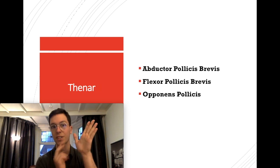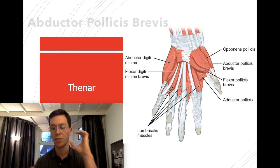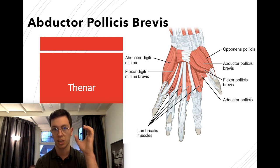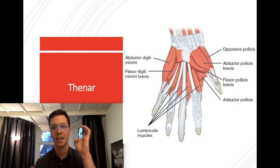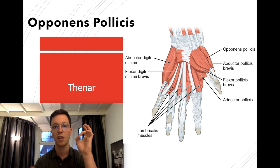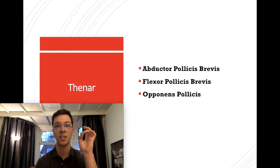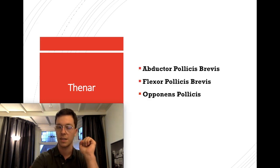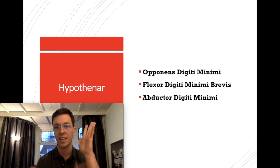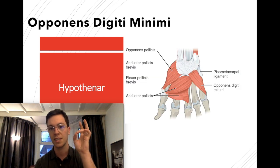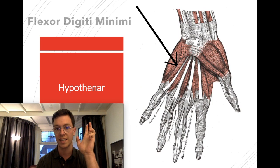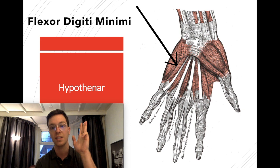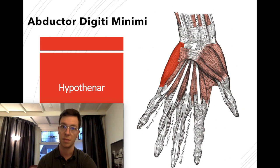The thenar muscles in your thumb consist of three muscles: the abductor pollicis brevis, which helps you to abduct your thumb; the flexor pollicis brevis, which helps you to flex it; and the opponens pollicis, which is used to touch the fingertips of your other fingers. In your hypothenar — your pinky — you also have an opponens digiti minimi that helps you touch the thumb, a flexor digiti minimi brevis, and an abductor digiti minimi.